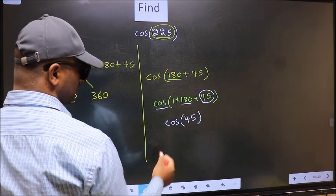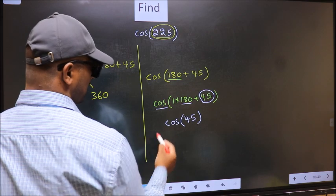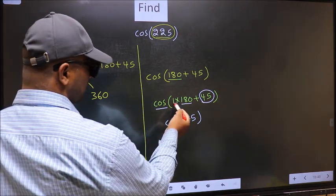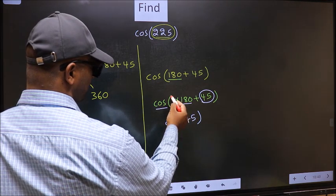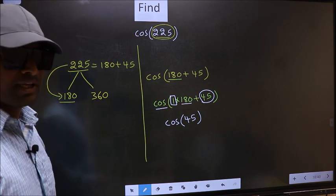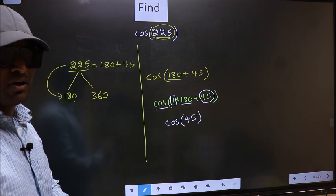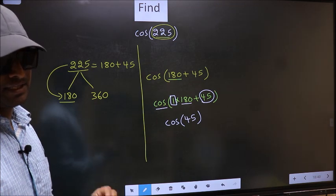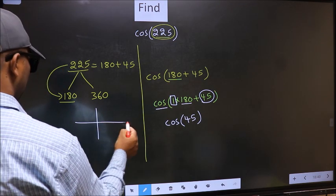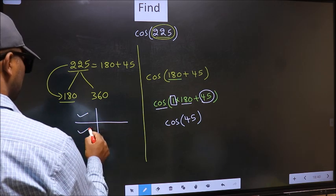Now the question is, will we get here plus or minus? To answer that, we should look at the number before 180. That is 1, and 1 is odd. All the odd multiples of 180 lie either in the second or in the third quadrant.